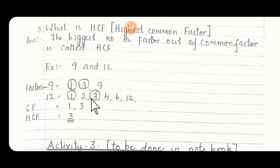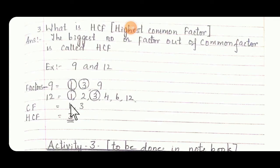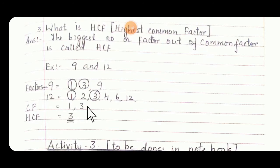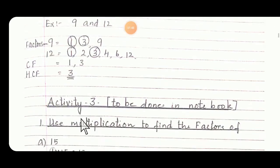Then 12 in how many ways? That is 1s are, 2s are, 3s are, 4, 6, and 12 — we can get 12. Now compare between 9 and 12. Common is 1 and 3. Write down common factor equals 1 and 3. HCF equals 3 — the highest number we are going to write.